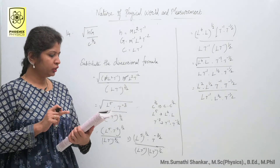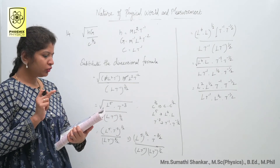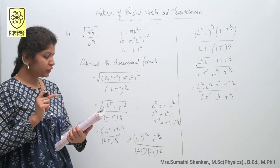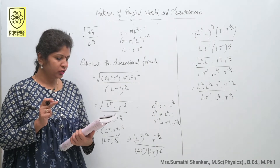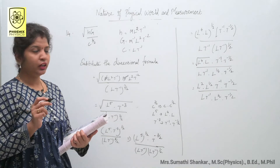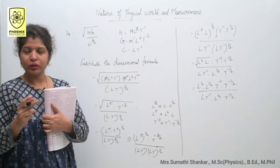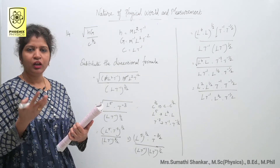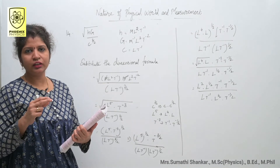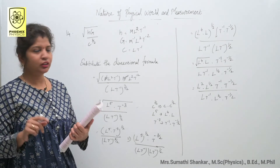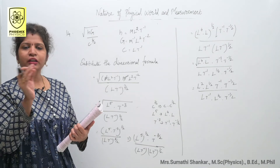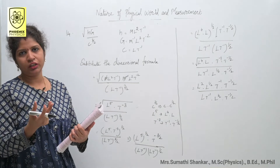Question number 14: Planck's constant H, speed of light C, and Newton's gravitational constant G are taken as three fundamental constants. Which of the following combinations has the dimension of length? There are two methods. Method one: apply the dimensional formula directly and solve three equations. Method two: choose an option and verify dimensionally.